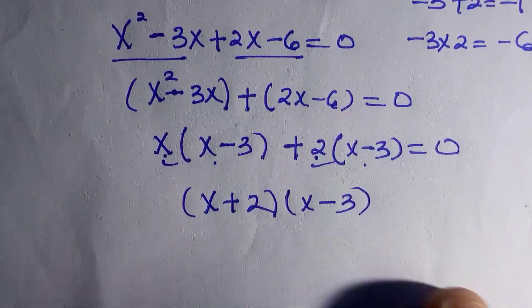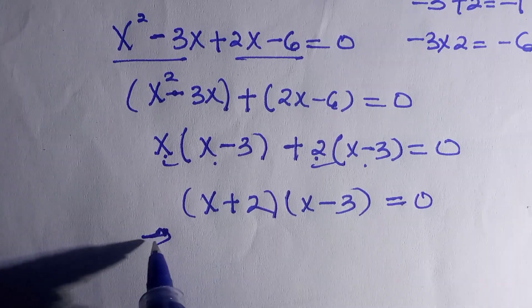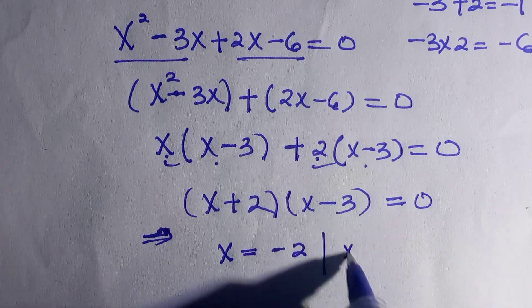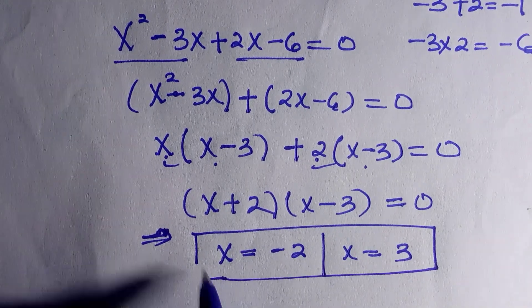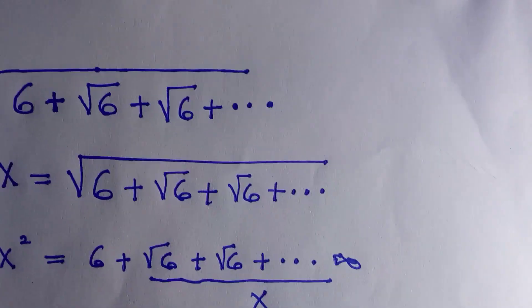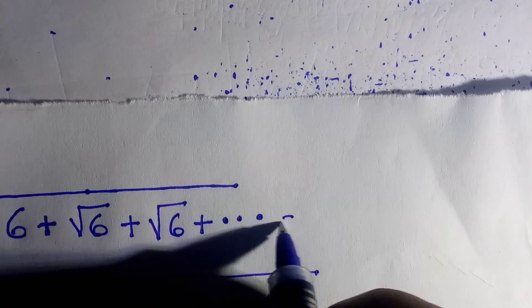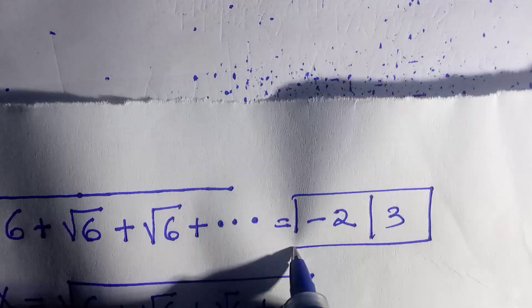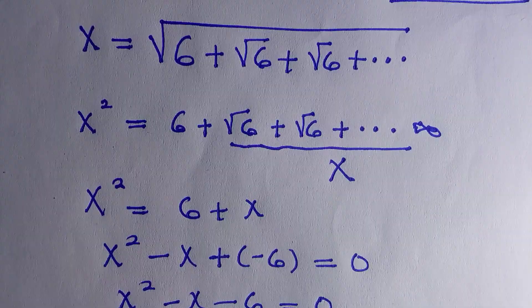Then we're going to have x plus two bracket x minus three equals zero. So from here we conclude that the value of the two: x equals minus two or x equals three. If you expand the root above, these are the values we're going to get. I hope you like this video, give a thumbs up, and don't forget to subscribe to this channel. I'll see you in the next class.